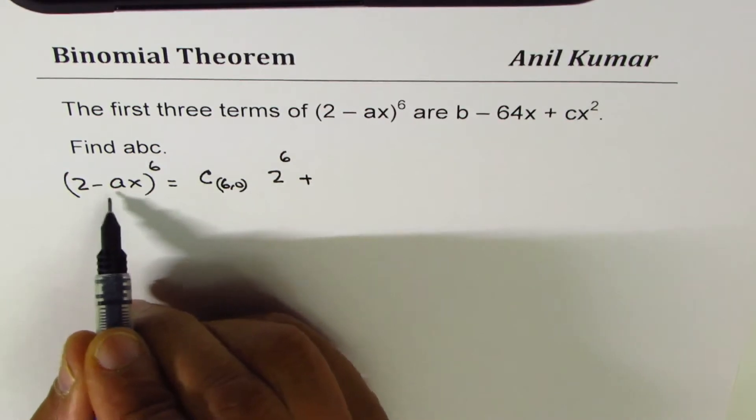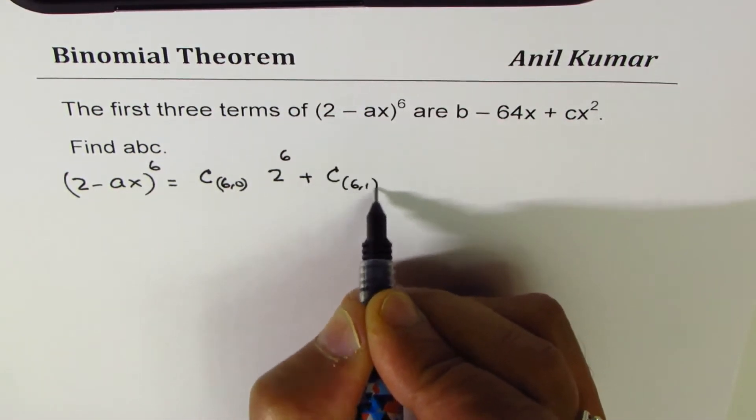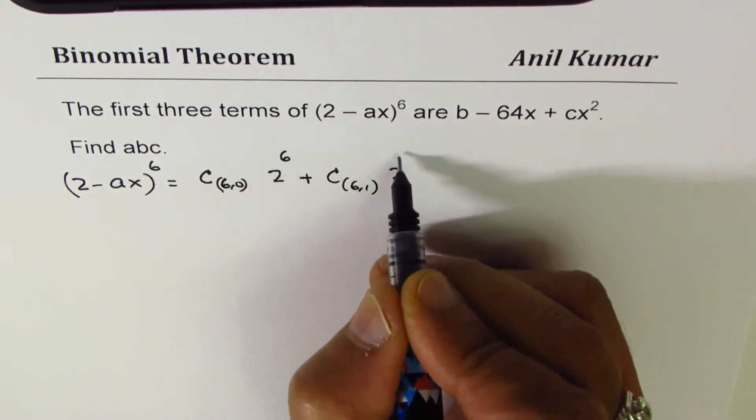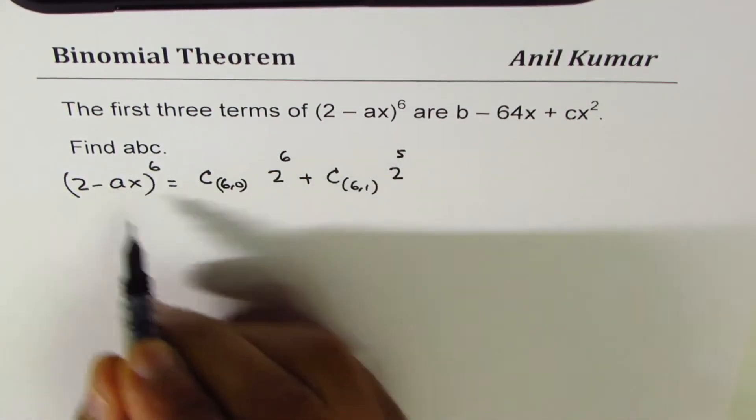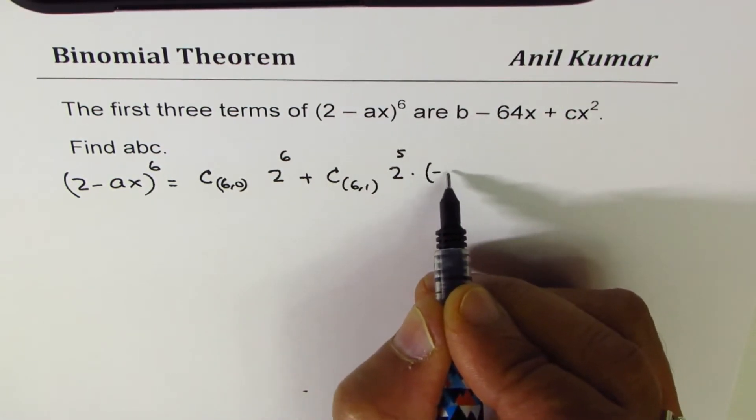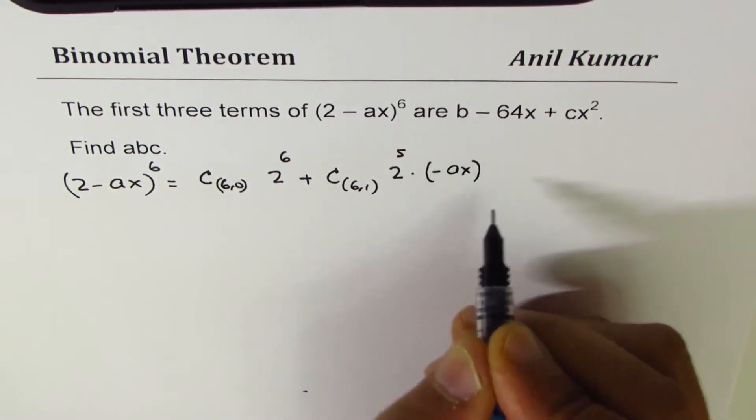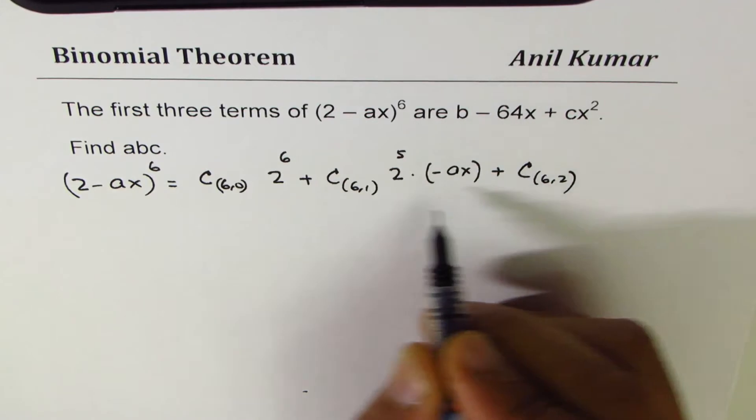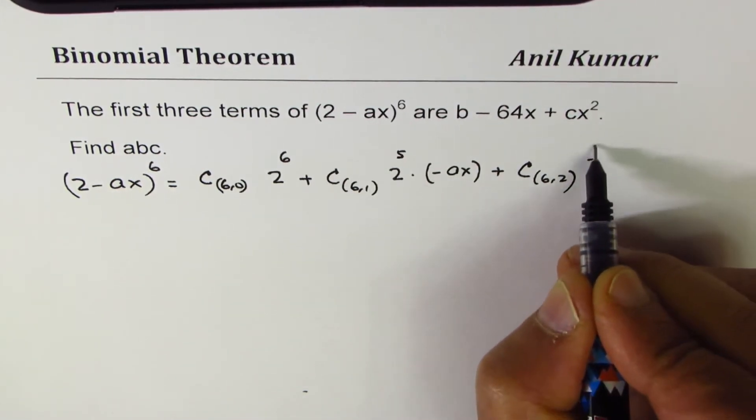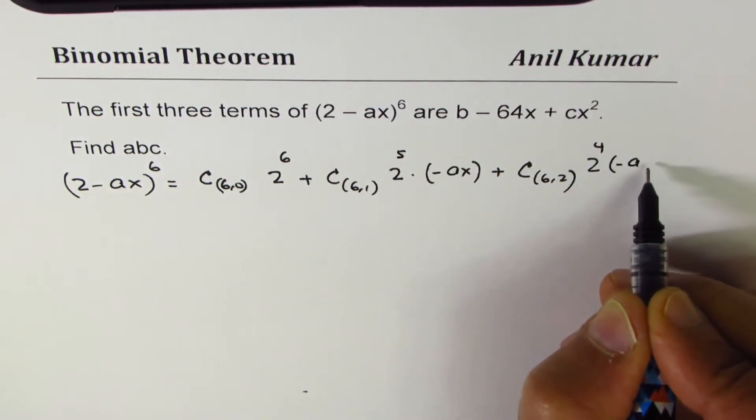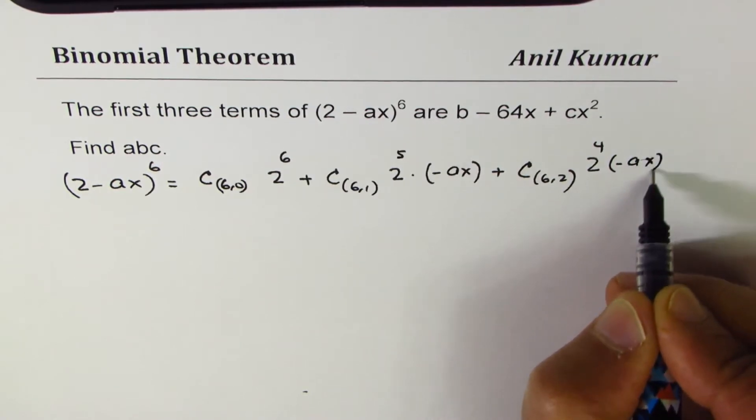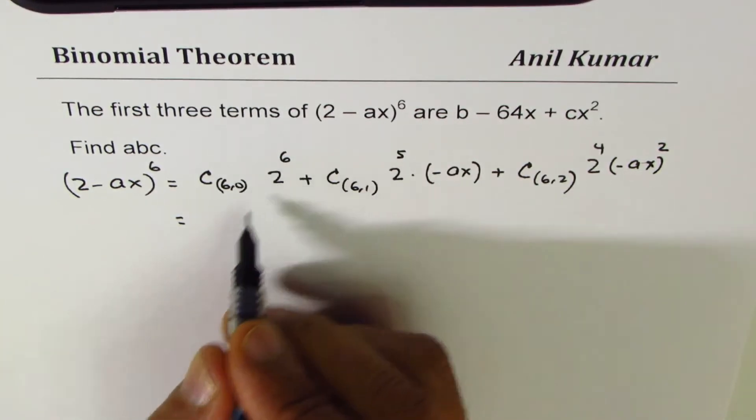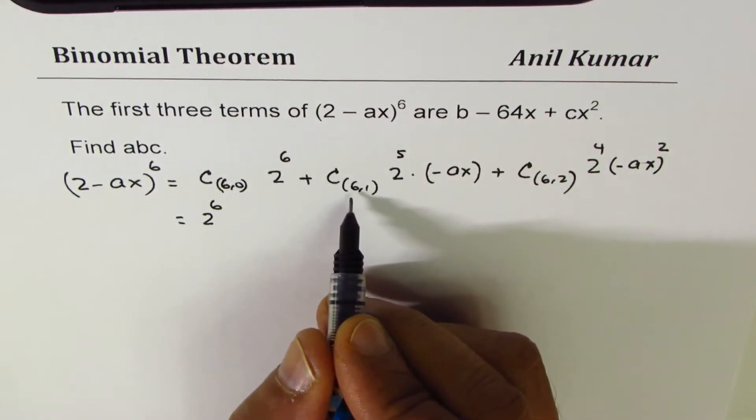We can write this as C(6,0) × 2^6 + C(6,1) × 2^5 × (-ax) + C(6,2) × 2^4 × (-ax)^2.